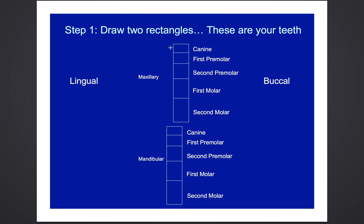So the first thing we'll do is draw two large rectangles — one here and one right here. This represents your maxillary teeth, and then this rectangle is going to represent your mandibular teeth. You separate the rectangle according to the teeth: a canine, first premolar, second premolar, first molar, second molar. The rectangles are drawn to represent the size of the teeth, so the molars are larger than the premolars and the canine has the smallest one.